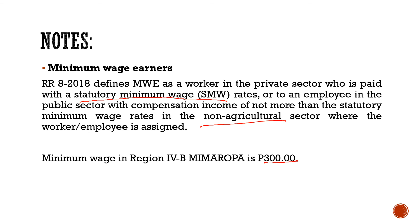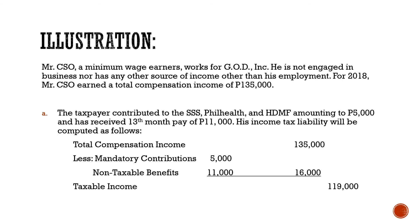We have illustrations dito for minimum wage earners. Mr. CSO ay minimum wage earner who works for GOD Inc. He is not engaged in business nor has any other source of income other than his employment. For the year 2018, nakapag-earn siya ng total compensation income of ₱135,000. Aside doon, siya ay nag-contribute or may mga mandatory contributions siya to SSS, PhilHealth, and HDMF or Pag-IBIG amounting to ₱5,000, and nakareceive siya ng 13th month amounting to ₱11,000. How do we compute for Mr. CSO's tax due? Mr. CSO will be exempted from tax — wala siyang babayaran na tax given that he is a minimum wage earner.